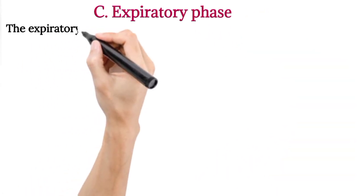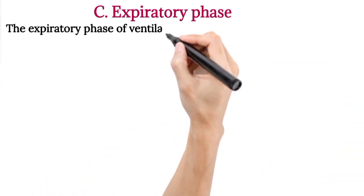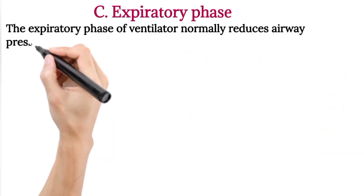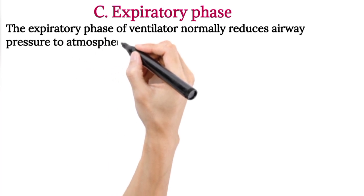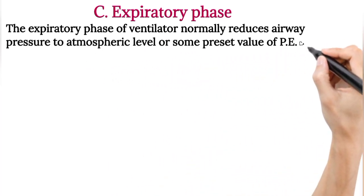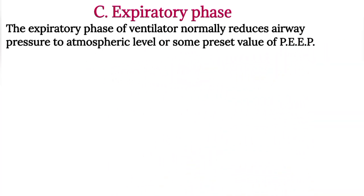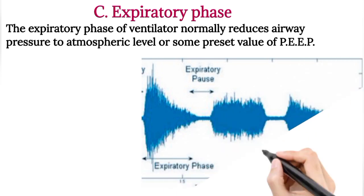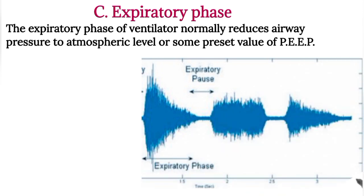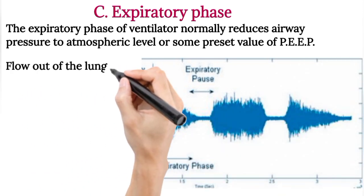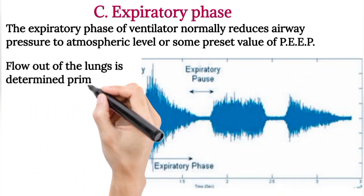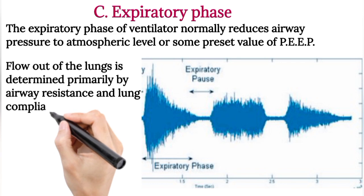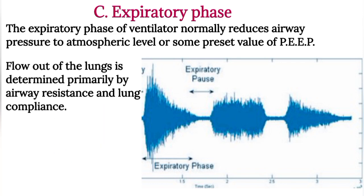The expiratory phase of the ventilator normally reduces airway pressure to atmospheric level or some preset value of positive end-expiratory pressure. Flow out of the lung is determined primarily by airway resistance and lung compliance.